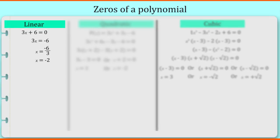Now if we look at the first example, we got the value of variable x by dividing 6 and 3 which are constant coefficients. From this, we can conclude that zeros of a polynomial have some relation with constants and coefficients. Now if we have a linear polynomial in the form of ax plus b, the relation will be minus b by a. This is for linear equation.